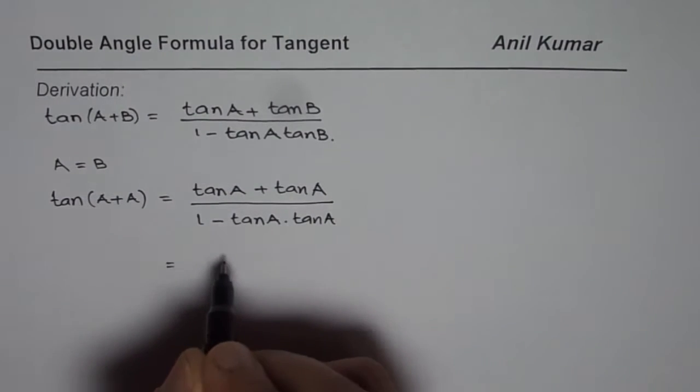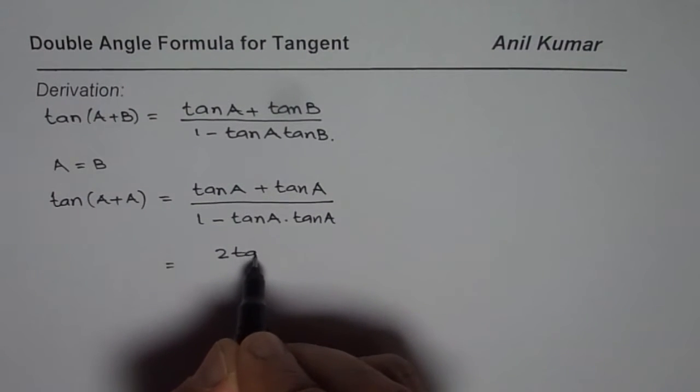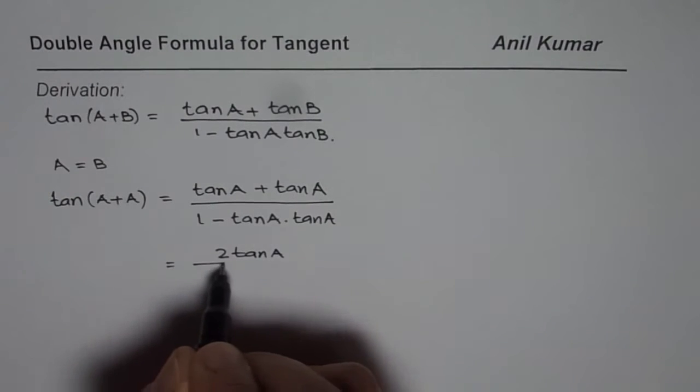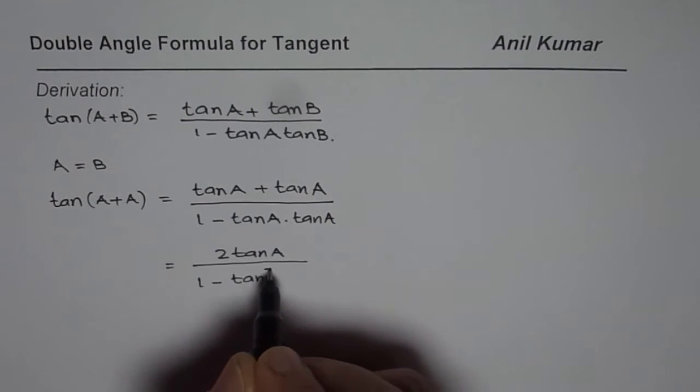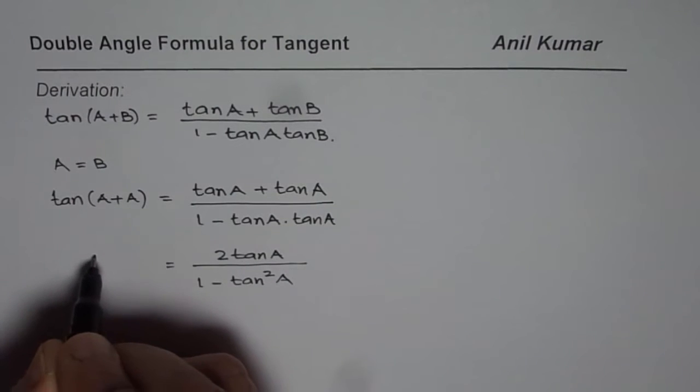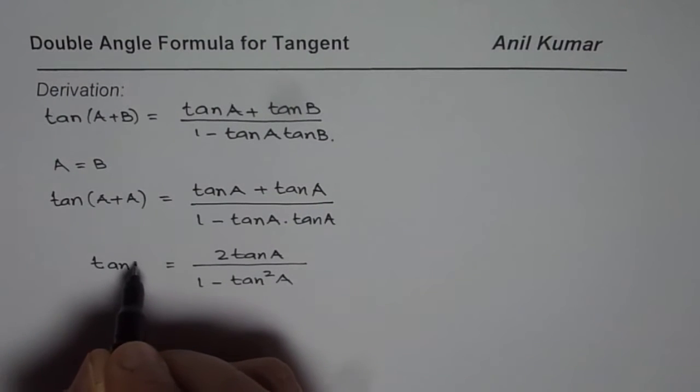That gives me 2tan(A) over 1 - tan²(A), and this equals tan(2A).